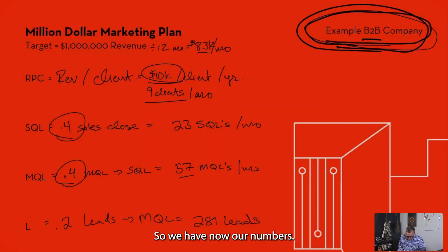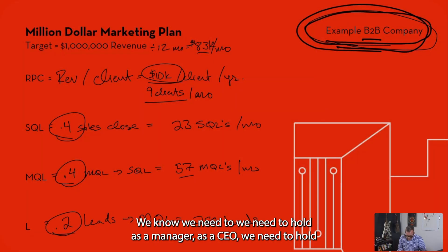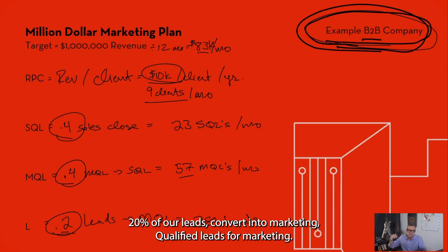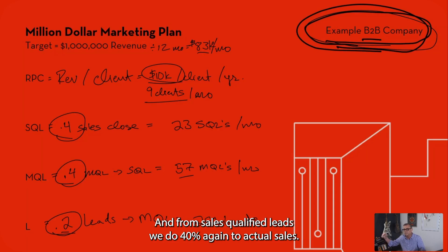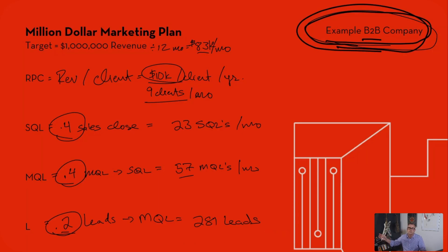So we have our numbers. We know we need to hold, as a manager, as a CEO, we need to hold 20% of our leads converting into marketing qualified leads. From marketing qualified leads, 40% need to transform into sales qualified leads. And from sales qualified leads, we do 40% again to actual sales.